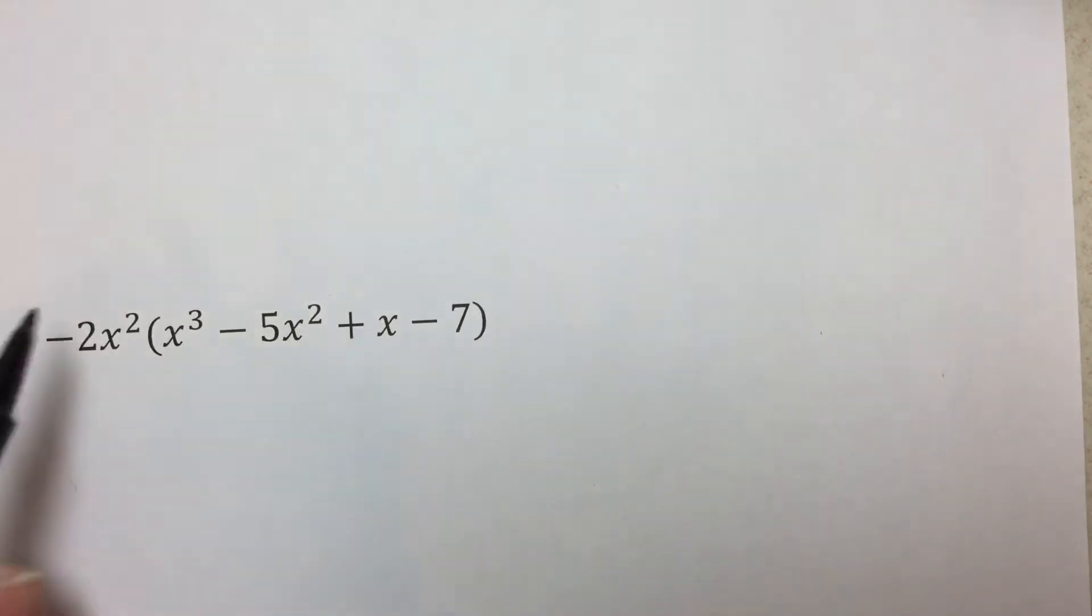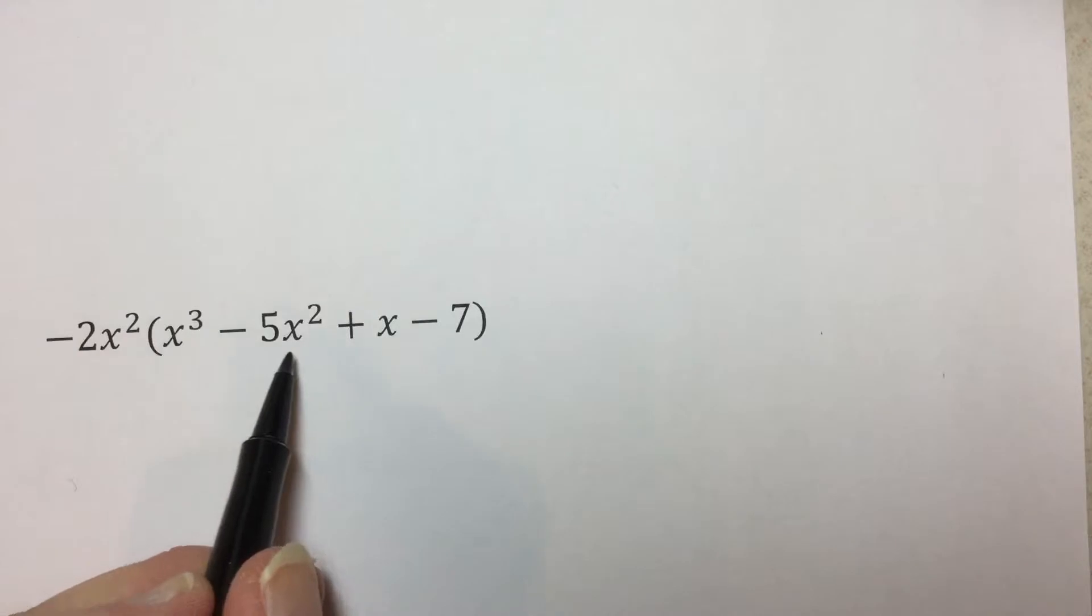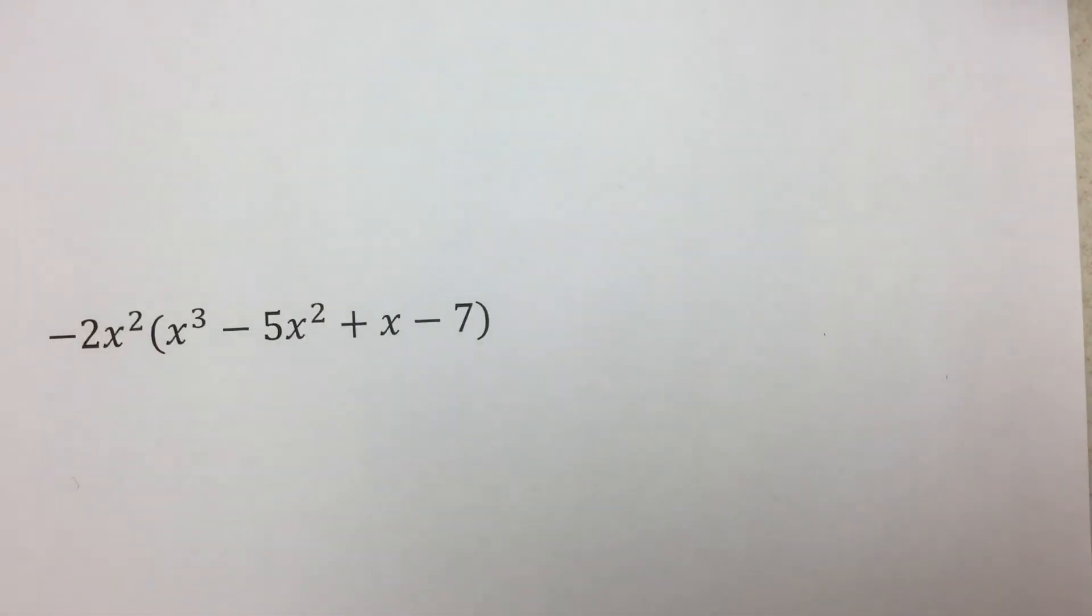This next example is a monomial times a four-term polynomial. We will use the distributive property here by multiplying the monomial and each term of the polynomial together. You can try to do this mentally when possible. Remember that we multiply coefficients, and when the bases match, add exponents.